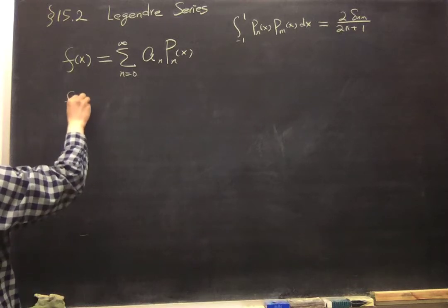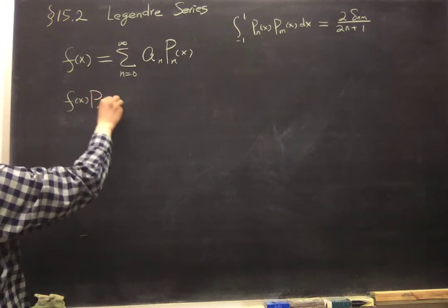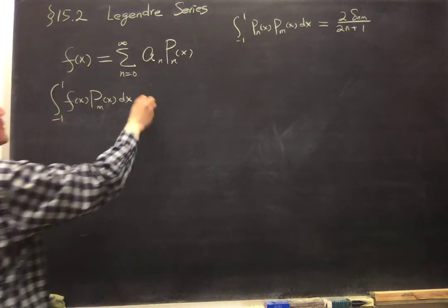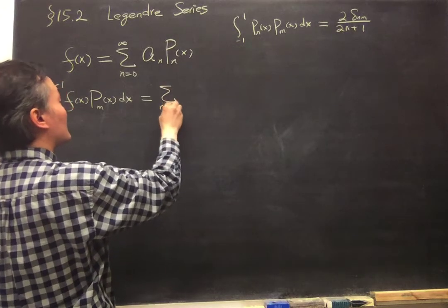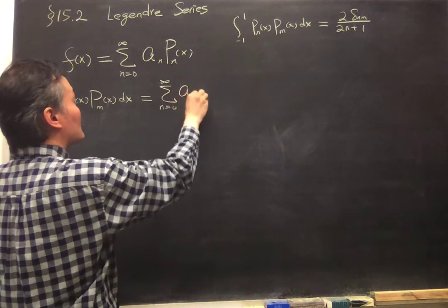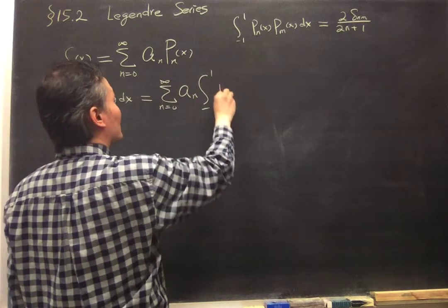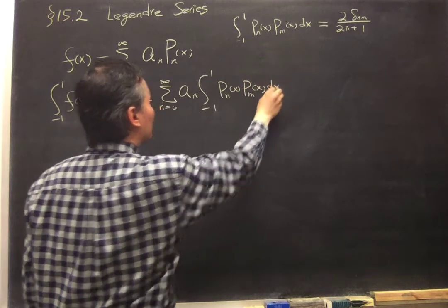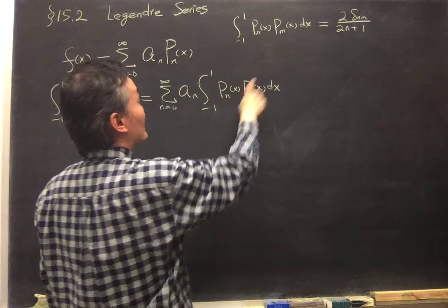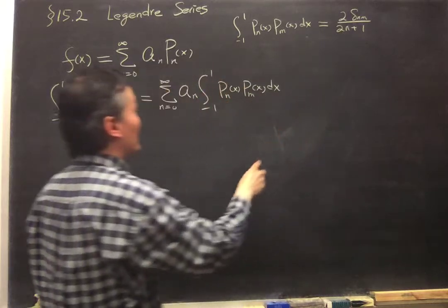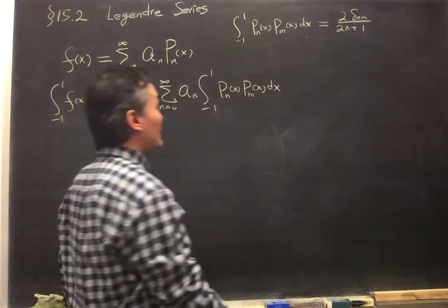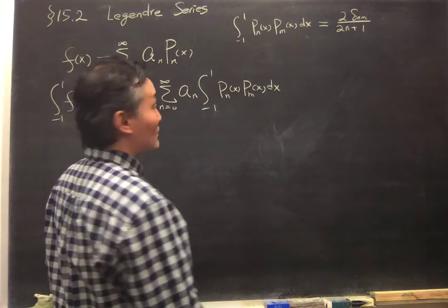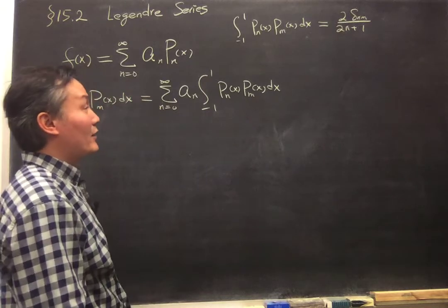So you have f(x) times P_m(x) dx and integrate over the whole range P_m(x). But then this is exactly this one. So we know that this is the right-hand side here. We have a Kronecker delta δ_nm, which is only non-zero. It's 1 for n equals to m.